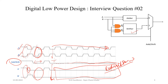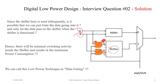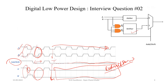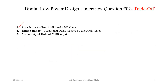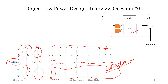This solution will definitely solve the higher power consumption problem in the circuit. In the previous problem we applied a clock gating concept, but here we are gating the real data signals — so this kind of implementation can be referred to as data gating. Now let's see the trade-offs. We had to introduce two additional AND gates, so there will be extra area cost. Also, because of these AND gates, there will be extra delay added in the timing paths.